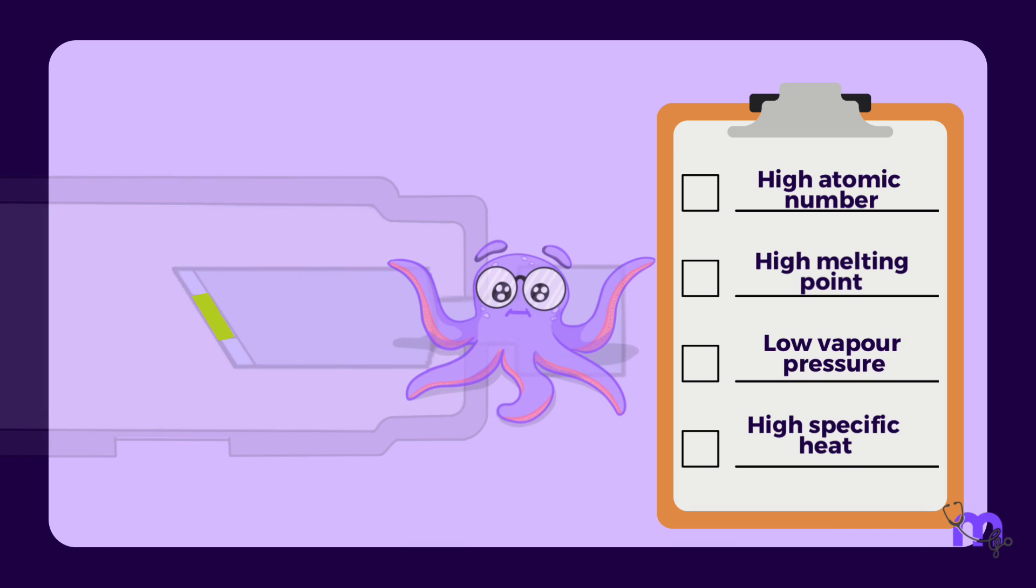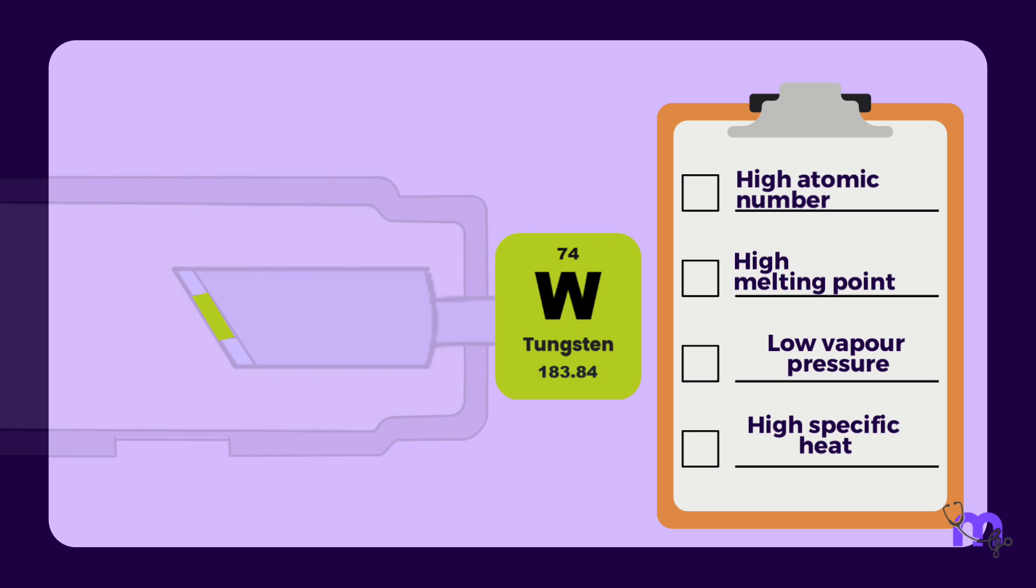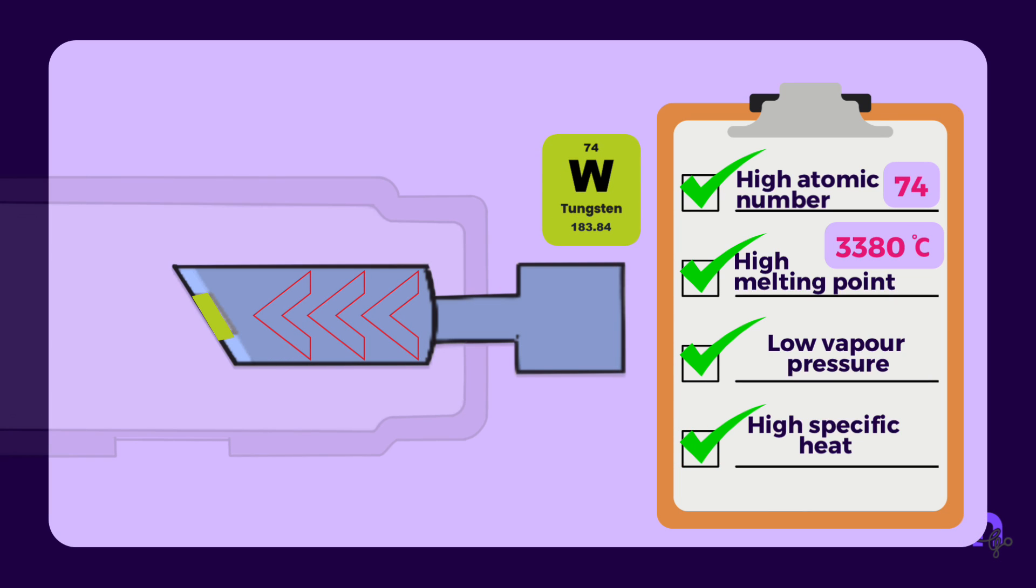So how does tungsten become our ideal target material? Tungsten has a high atomic number, that is 74, a high melting point of 3,380 degrees Celsius, and a low vapor pressure. The only criteria that it does not meet is that of having a high specific heat. To compensate for this, the tungsten target is embedded in a copper block, which is a good thermal conductor.